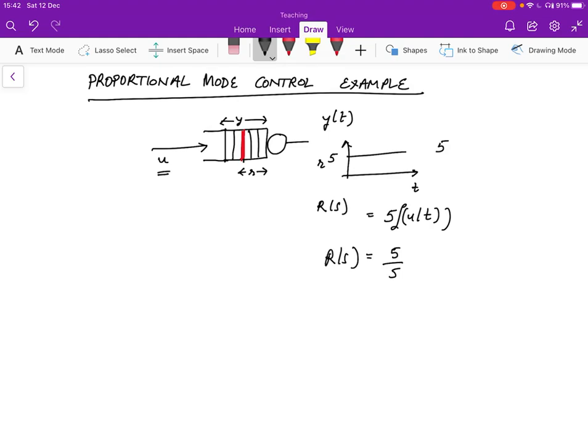So we want Y of S to be equal to five over S as well. We want Y of S equals R of S equals five over S. And we will see actually what it will be.